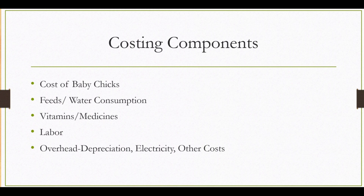Straight line method of depreciation is used for the housing of the chickens, and costing is in Philippine Peso. Next, we have the costing components — the expenses associated in raising chickens. First, the cost of baby chicks when we acquire them. Second, the feeds and water consumption. We also have the vitamins and medicines, the labor or salary of the one in charge at the farm, and the overhead allocation for depreciation, electricity, and other costs.